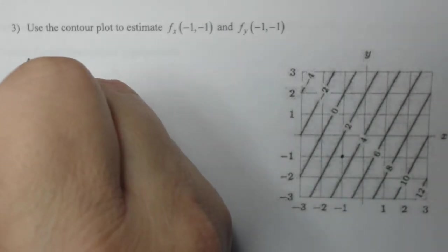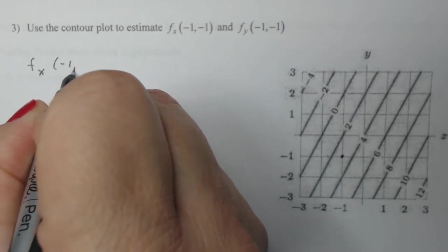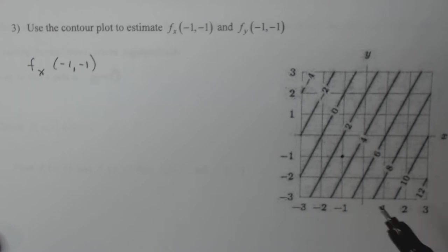Now if I want to estimate, remember these are estimates, so we can't be wildly exact, but we can make some pretty good guesses based on the contour map. When I'm at this point right here, it looks like my z value is approximately three, somewhere between two and four.